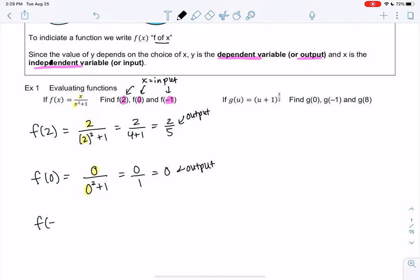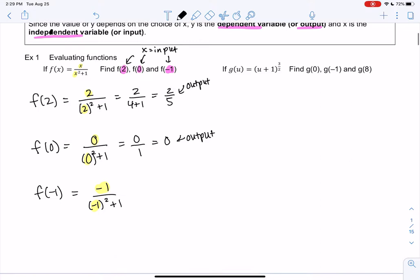And let's try negative 1. This is why parentheses are important, which I didn't do for the 0. We're squaring negative 1, so we need to keep that in mind. So we get negative 1. In the denominator, we get negative 1 squared is 1 plus 1. So negative 1 half is my output, or my y value.